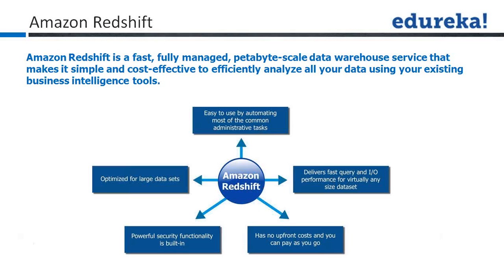Amazon Redshift is a column database. I want to give you clarity here — a column database. You may not have had a chance to hear about what a column database is. You've heard about databases like Oracle, SQL, Teradata, or IBM DB2, but you haven't heard about a column database.